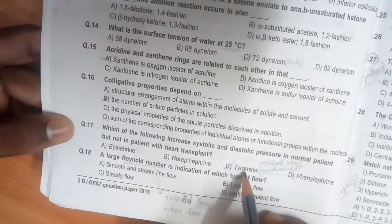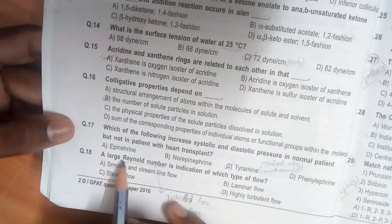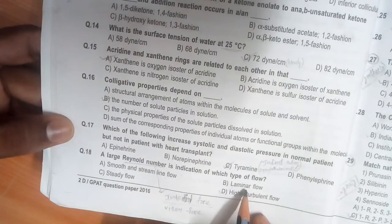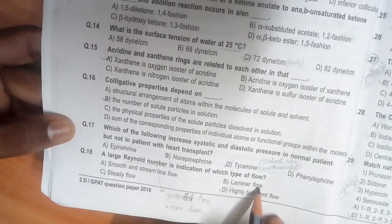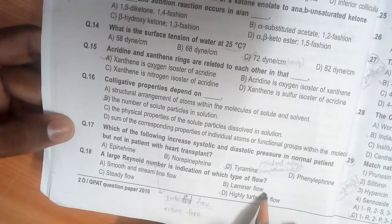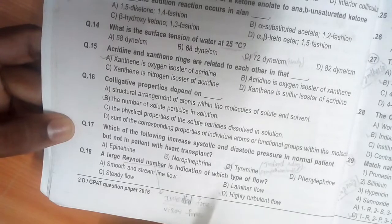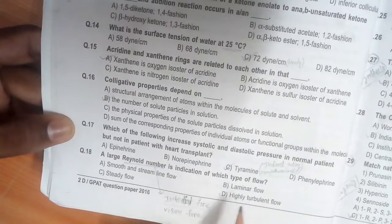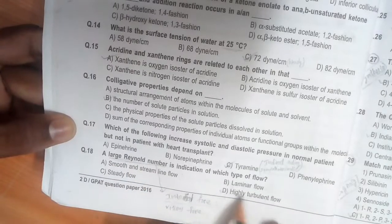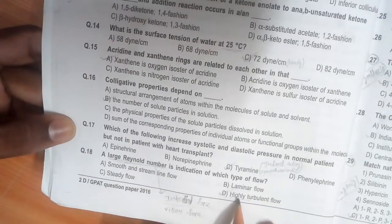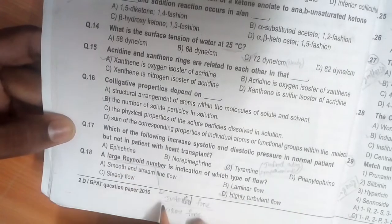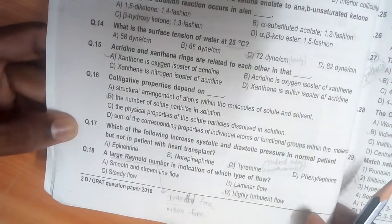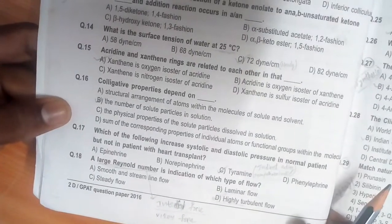A larger Reynolds number is an indication of which type of flow? Remember, less than 2300 shows laminar flow, 2300 to 4000 shows transformation from laminar to turbulent flow, and above 4000 gives turbulent flow. They said 'large,' which indicates high number, so we can go for highly turbulent flow. Reynolds number is inertial force by viscous force. Thank you. Please watch the second part also for better understanding.